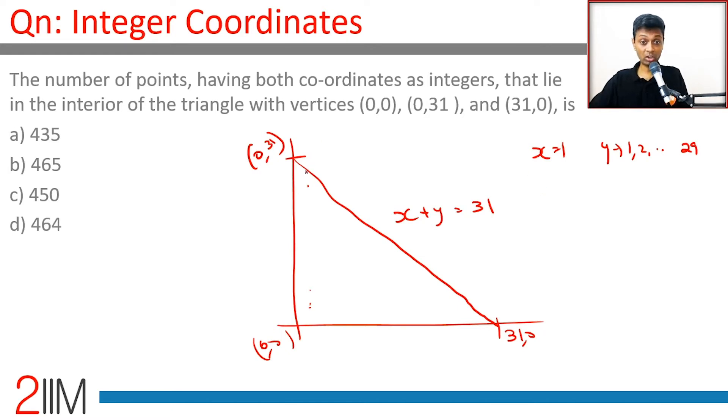If it were equal to 31, it would lie on the line, that doesn't work. Points on the axis won't work, points on the line won't work.